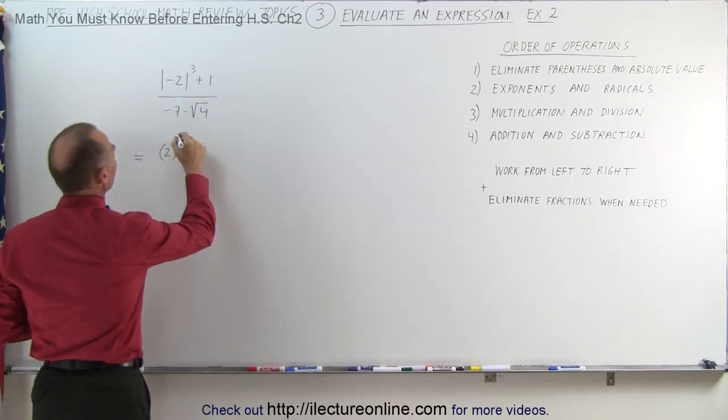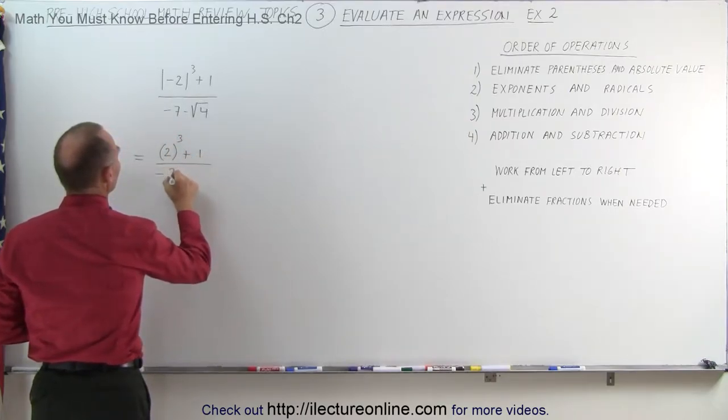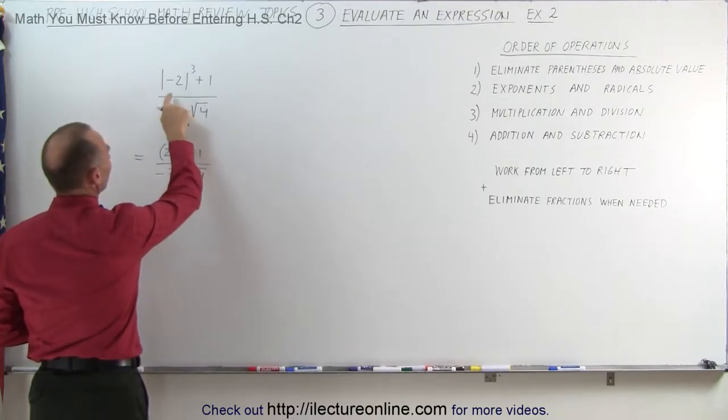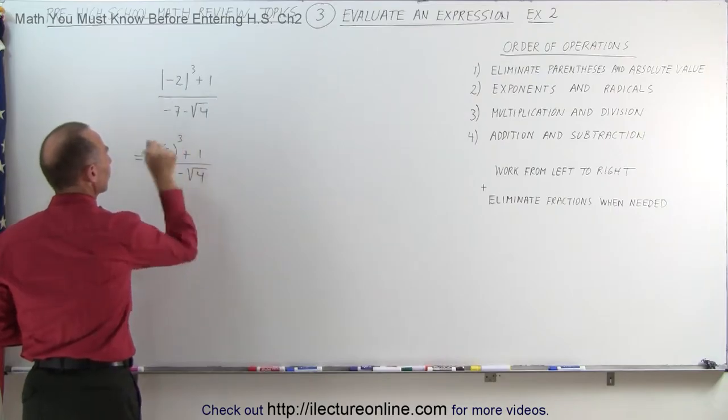This is equal to a positive 2. I'm going to put parentheses around it, raised to the third power, plus 1, divided by minus 7, minus the square root of 4. So notice, the absolute value of a negative 2 is equal to a positive 2, which is now raised to the third power.